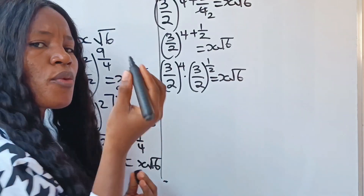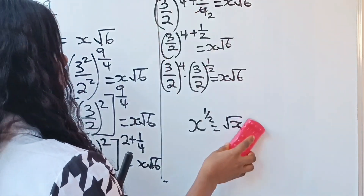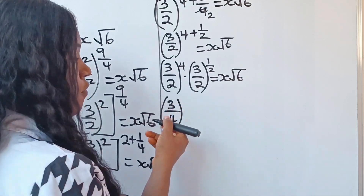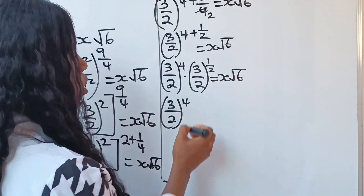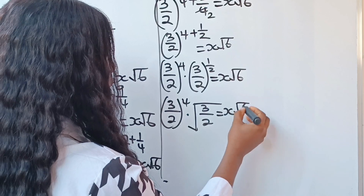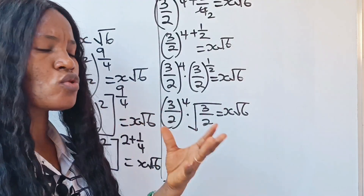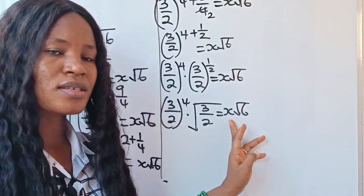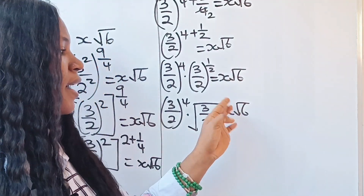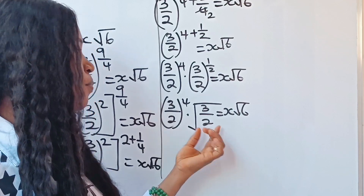Recall that x to the power of 1/2 is the same as the square root of x. So we can write this as (3/2) to the power of 4 multiplied by the square root of 3/2, equal to x root 6. Now, to get the value of x we need to remove the root 6 on the right, and the only way to do that is to get a root 6 on this side of the equation.